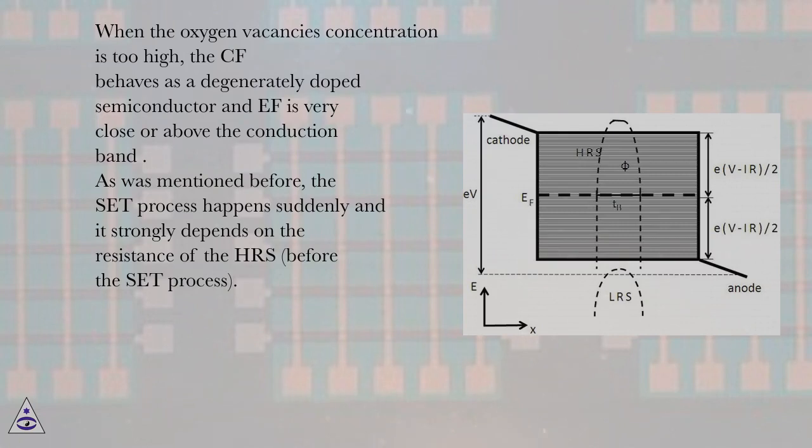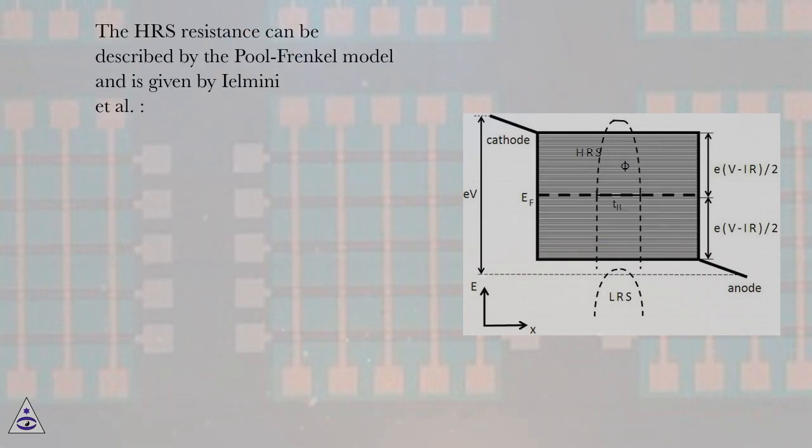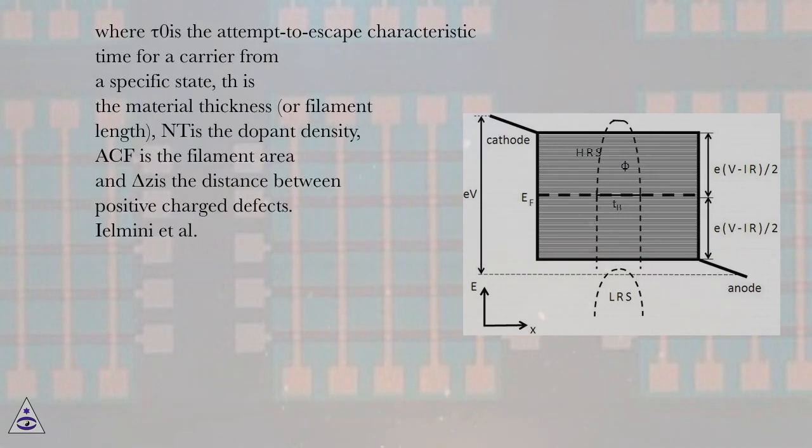As was mentioned before, the set process happens suddenly and it strongly depends on the resistance of the HRS before the set process. The HRS resistance can be described by the Poults-Frankel model and is given by Ilmini et al., where tau0 is the attempt-to-escape characteristic time for a carrier from a specific state, TH is the material thickness or filament length, NT is the dopant density, ACF is the filament area and delta zis is the distance between positive charged defects.